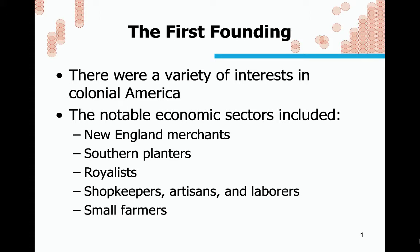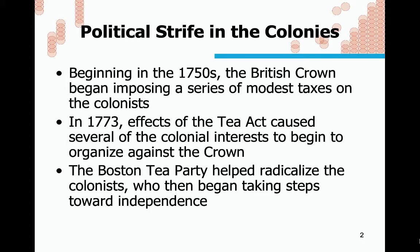There was recognition of a variety of interests in colonial America. We might think today that the interest was just really of the white colonists, but there were more economic sectors involved — the New England merchants, the southern plantations, those still loyal to the crown, shopkeepers, artisans, laborers, small farmers, and so on. The Constitution, the oldest still in force, was a product of the reconciliation of those diverse interests, which might explain why it's limited in its scope today.